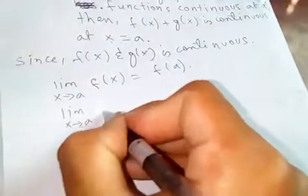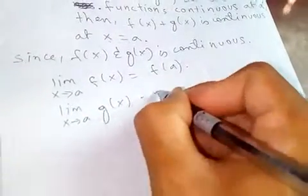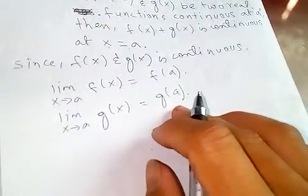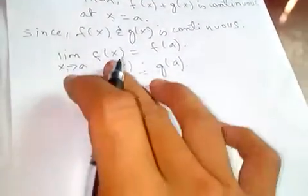And limit x tends to a, g of x is equal to g of a. Now if you add them.